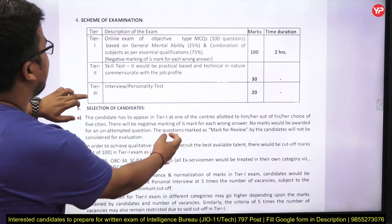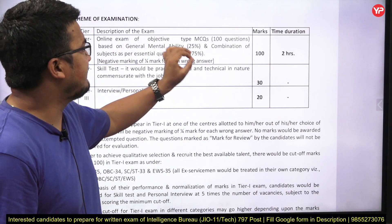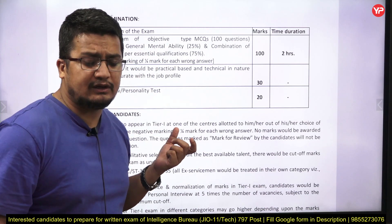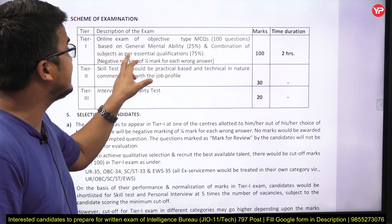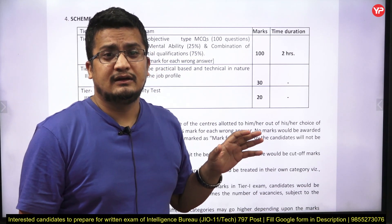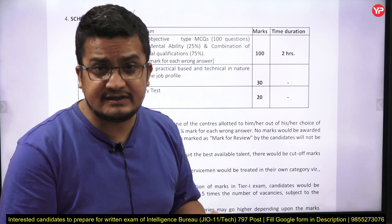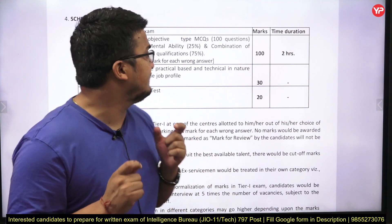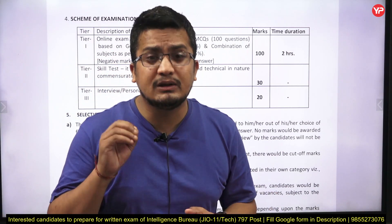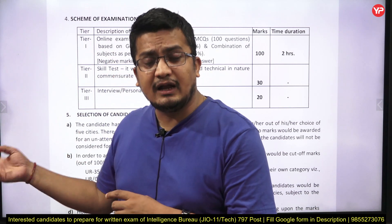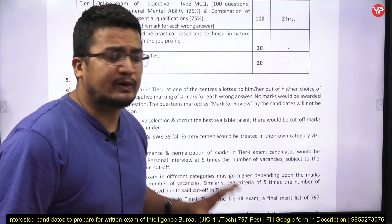The exam will be conducted in three stages: Tier 1, Tier 2, and Tier 3. Tier 1 is an online objective MCQ exam of 100 questions — 25% will be mental ability test and 75% will be a combination of subjects as per the essential qualification. This means subjects like computer science, electrical, electronics, and physics are all included. Then Tier 2 is a skill test, and Tier 3 is an interview and personality test.